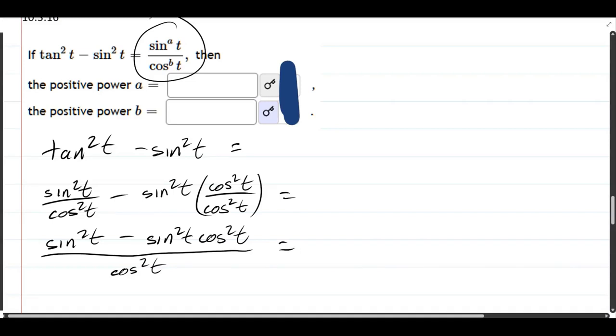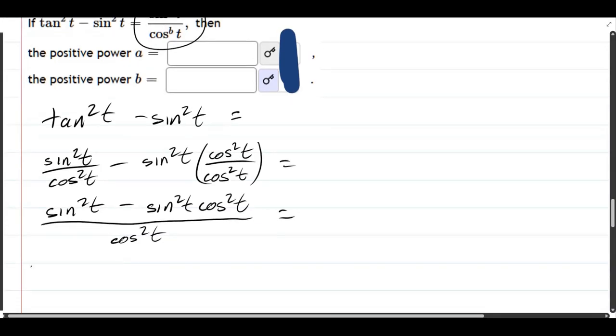So, what are our options? Well, I see a sine squared in both terms in the numerator, so let's factor that out. And we're left with 1 minus cos squared t divided by cos squared t. We're getting there.